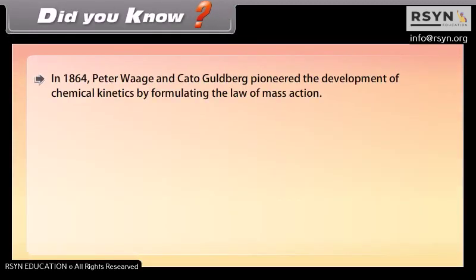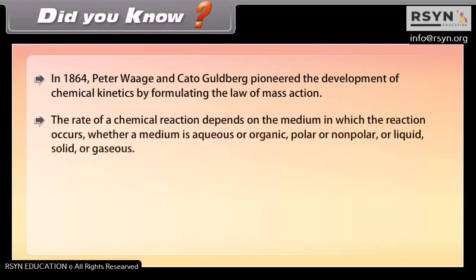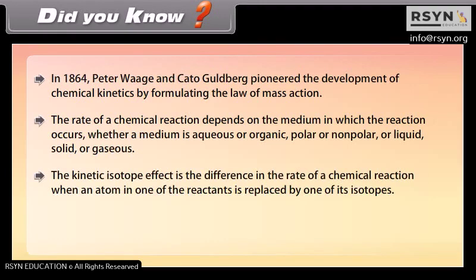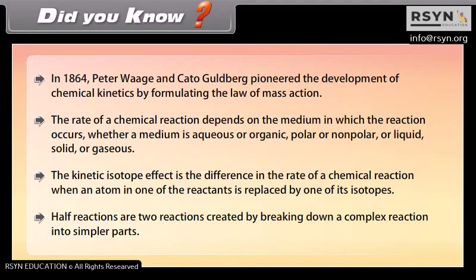Did you know? In 1864, Peter Waage and Cato Guldberg pioneered the development of chemical kinetics by formulating the law of mass action. The rate of a chemical reaction depends on the medium in which the reaction occurs — whether aqueous or organic, polar or non-polar, or liquid, solid or gaseous. The kinetic isotope effect is the difference in the rate of a chemical reaction when an atom in one of the reactants is replaced by one of its isotopes. Half reactions are two reactions created by breaking down a complex reaction into simpler parts.